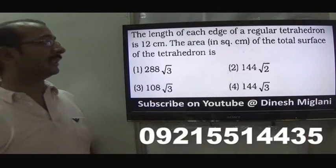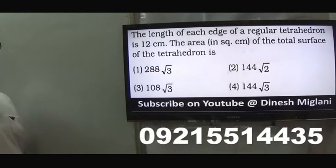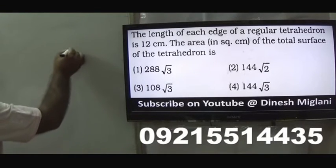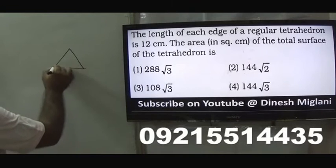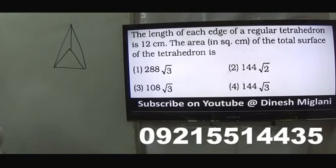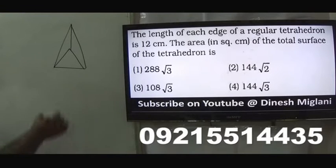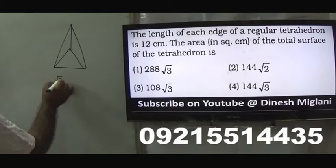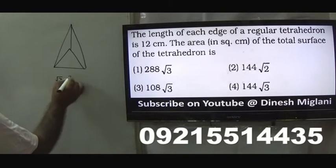Let us start with the first question of this session. It is given that the length of each edge of a regular tetrahedron is 10. We have to find the total surface area. First, we need to understand what a tetrahedron is. A tetrahedron is a prism whose all surfaces are in the shape of equilateral triangles. Now I have to find the total surface area. We have four equilateral triangles. The area of one equilateral triangle is root 3 by 4 times a squared.